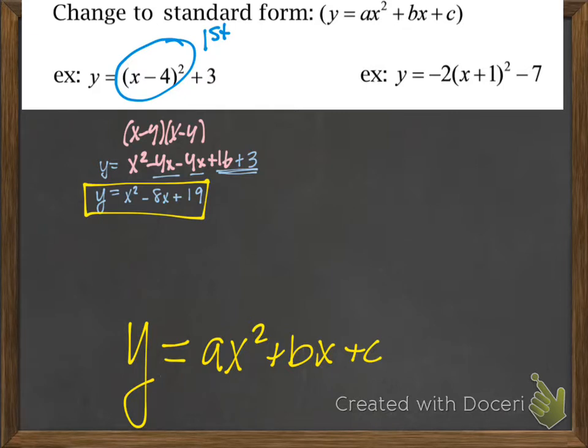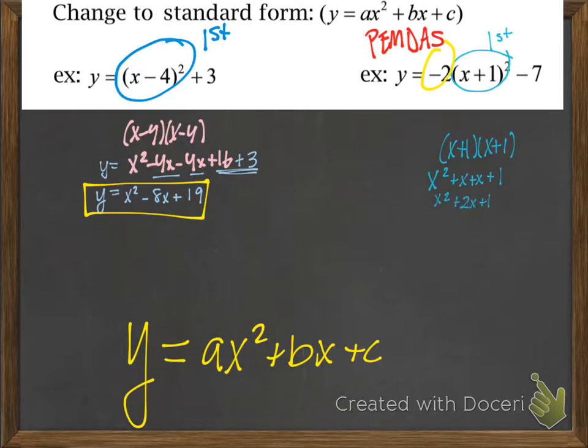we have a number outside the binomial squared, but we still have to take care of the exponents before we multiply by this 2 here. So we're going to foil that out and get an x squared plus 2x plus 1.